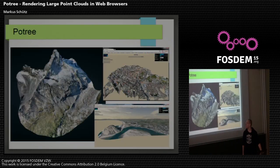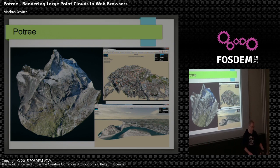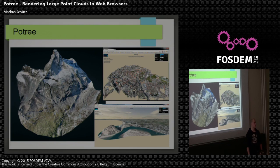Here are three examples. The point cloud to the left is from the Matterhorn and consists of 90 million points. The one to the top right is from the city of Lausanne, and the one at the bottom is from the coast in the United States and consists of 600 million points. All of these point clouds were rendered in real time in the Chrome browser.